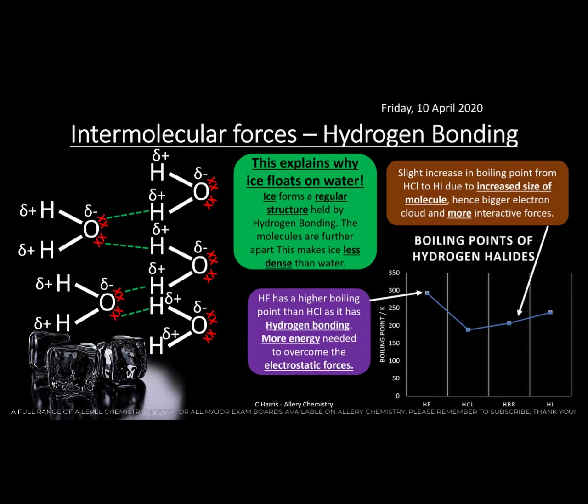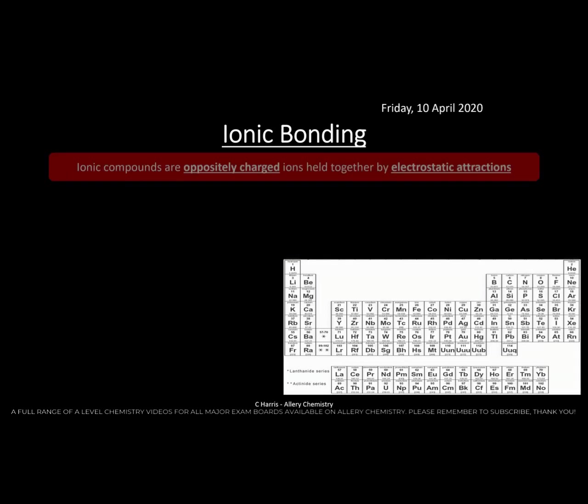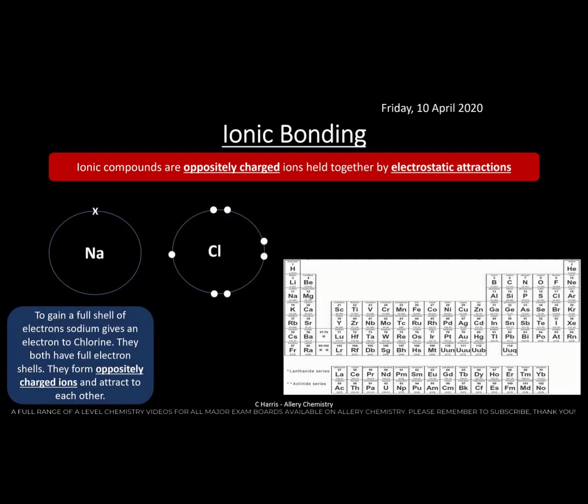Now let's look at ionic bonding. Ionic compounds are made of oppositely charged ions. An ionic bond is formed from ions, which are created when an atom gives up or receives electrons. In this example, sodium has one electron in its outer shell and chlorine has seven. Sodium gives up its electron and chlorine accepts it — both then have a full shell, which is more stable.